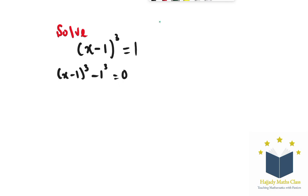Next, we use difference of two cubes. So let a be equal to x minus 1 and b be equal to 1. Using difference of two cubes, I'm going to have a to the power of 3 minus b to the power of 3 equal to a minus b times a squared plus b squared plus ab.